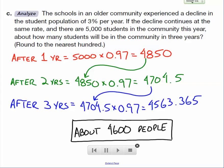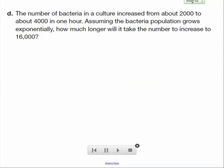All right, we're going to do the same thing here on example D. The number of bacteria in a culture increased from about 2,000 to about 4,000 in one year. Assuming the bacteria population grows exponentially, how much longer will it take the number to increase to 16,000?